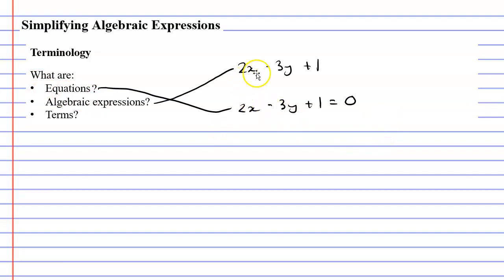Now this algebraic expression here actually has three terms. 2x is one term, negative 3y is the second term, and the 1 is our third term. Usually terms will be broken up by the minus or the plus sign.